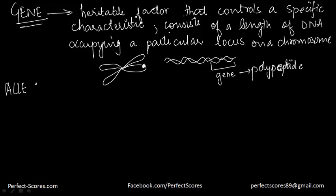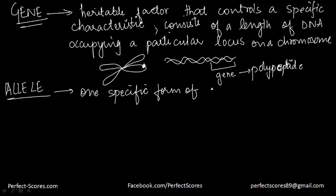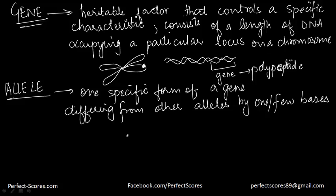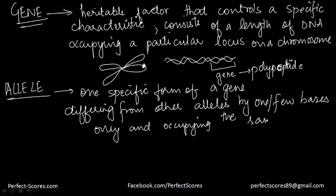The next important term, especially for theoretical genetics, is an allele. An allele is one specific form of a gene, differing from other alleles by one or a few bases only, and occupying the same locus as other alleles of the gene.